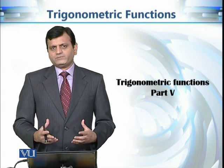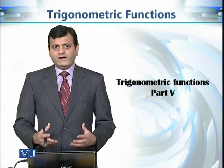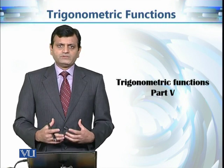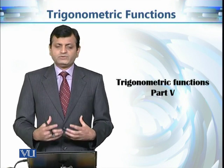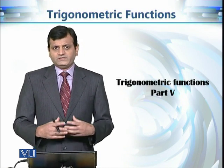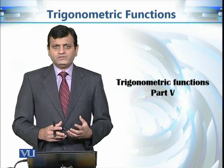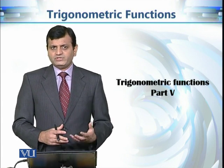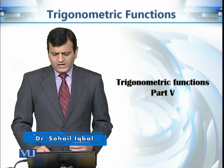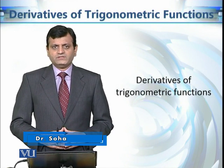This is the fifth and last module of our discussion on complex trigonometric functions. So far, we defined them, discussed their different properties, proved different identities, and most importantly, we discussed the mappings associated with these trigonometric functions. We studied in detail the mappings sine z, cosine z, and tangent z, and what are the images of different shapes from the z-plane into the w-plane under these trigonometric map functions. Now we are going to study the derivatives of these trigonometric functions in this module.